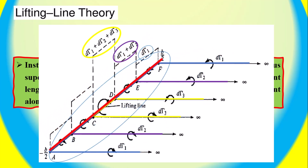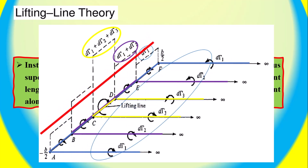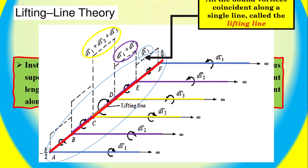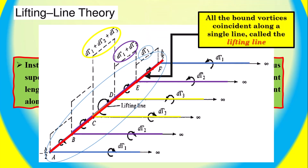Thus, instead of representing the wing by a single horseshoe vortex, when superimposing a large number of horseshoe vortices each with a different length of the bound vortex, but with all the bound vortices coincident along a single line, that line is called the lifting line.